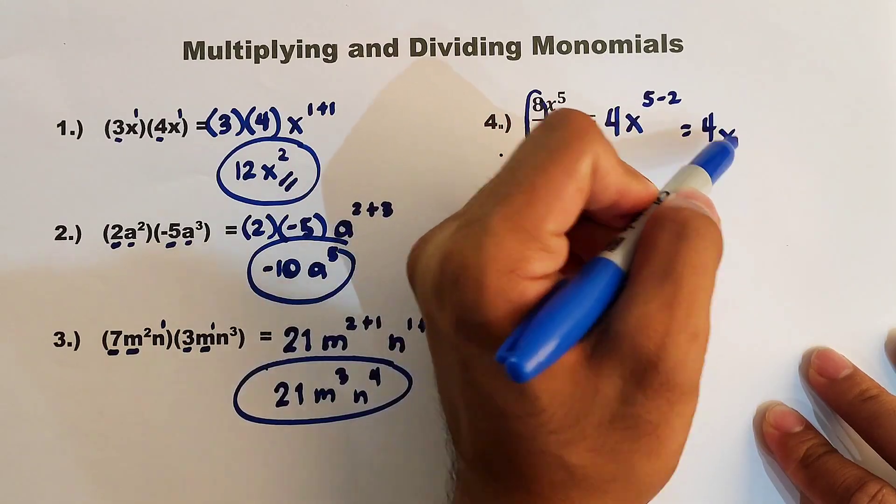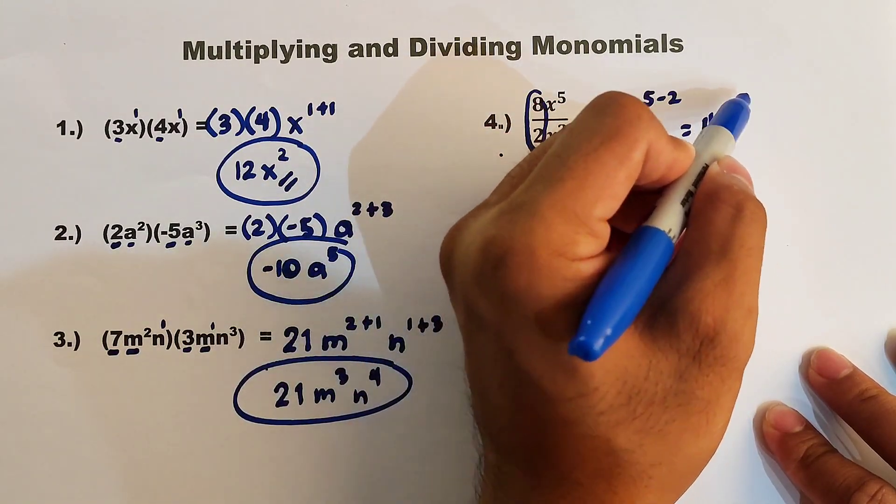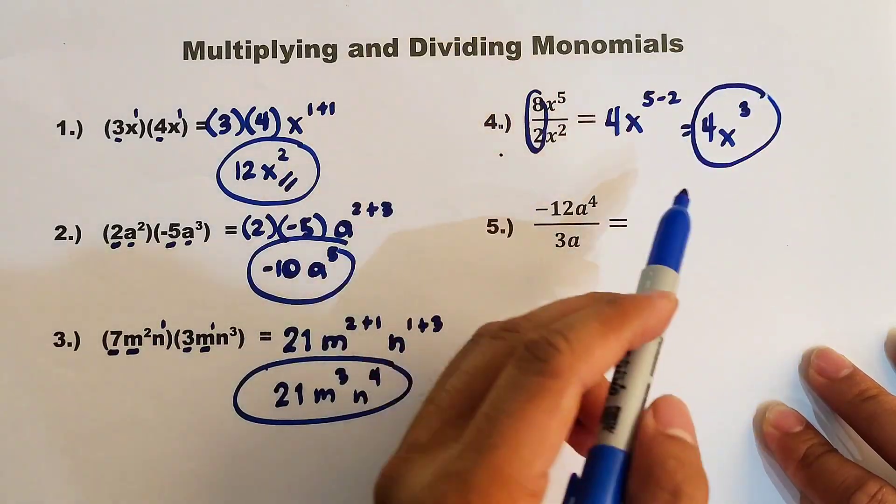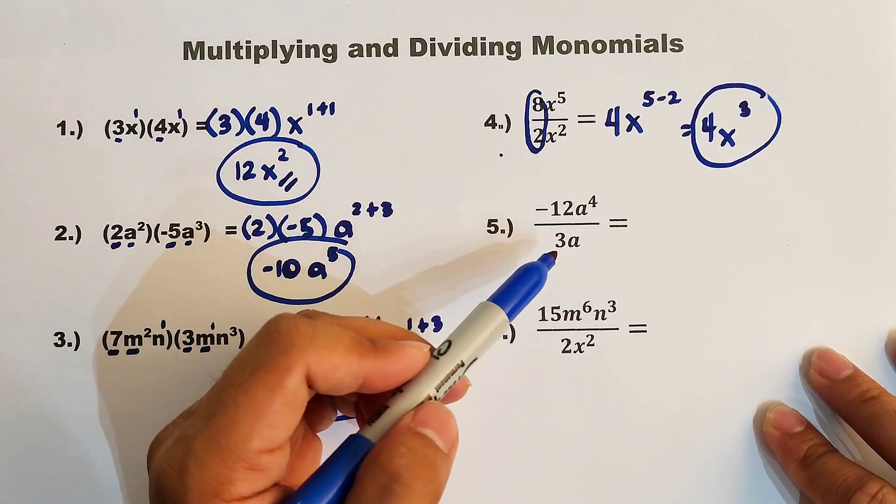And then, that is 4x, subtract this, 5 minus 2, that would be 3. And as you can see, this is now the quotient between these two monomials.